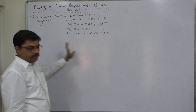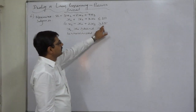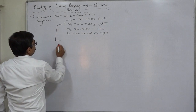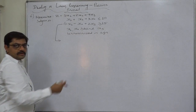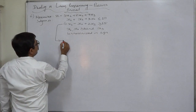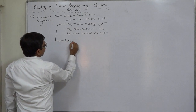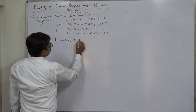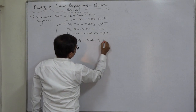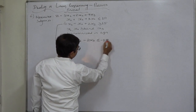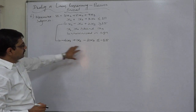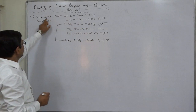Our objective is maximization, so the sign of all constraints should be less than or equal to. But the second constraint does not satisfy this, so we have to revise its sign. It will become minus 4x1 plus x2 minus 2x3 less than or equal to minus 15. Now both constraints have the less than or equal to sign, matching with the maximization objective.